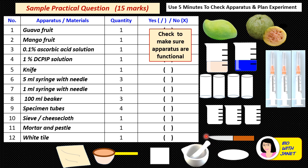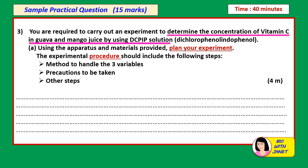A white tile is for you to cut the fruits, and filter paper or tissue paper is for wiping the fruits dry and other items. After checking your apparatus and materials, you start answering the question and carrying out the experiment. This sample practical question is 15 marks in total, and the time is 40 minutes. You have to time yourself, note what time you should stop, and by what time you should finish the experiment and answer all the questions.